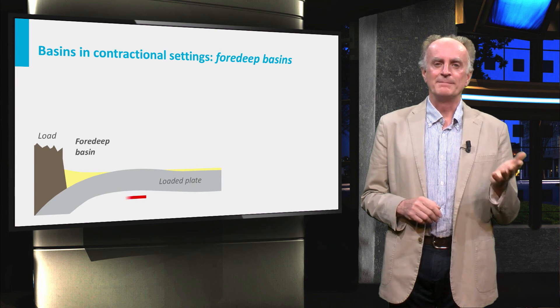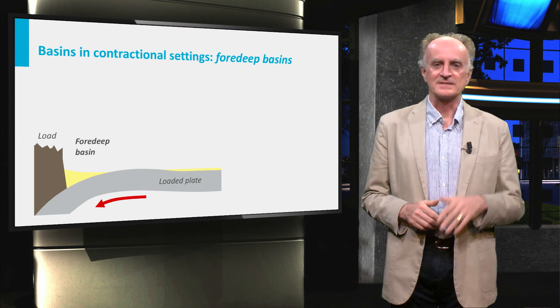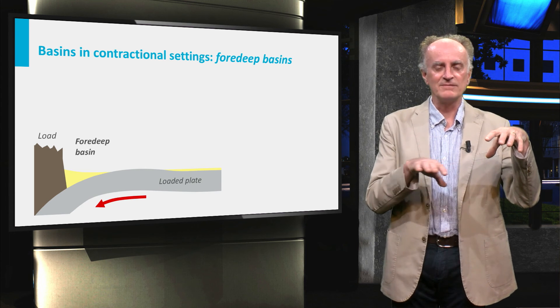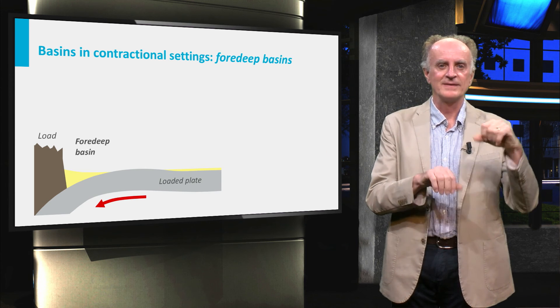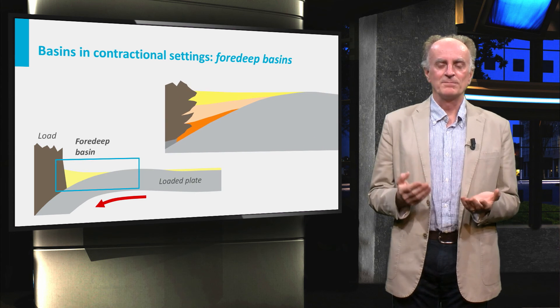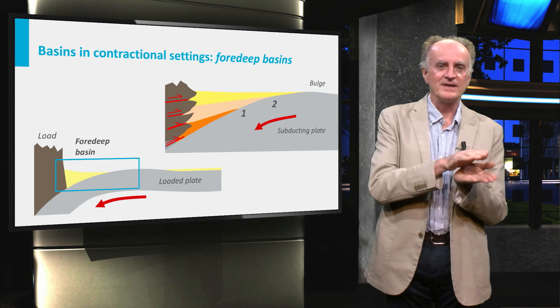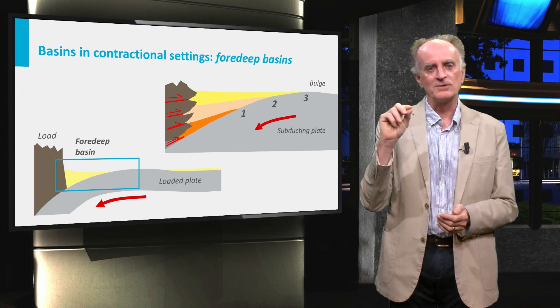In the picture you see the main elements of foreland basins: the load, the basin itself, and the loaded plate. The basin which develops has a triangular shape, thickening towards the mountain and pinching out away from it.